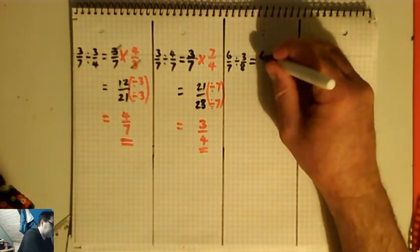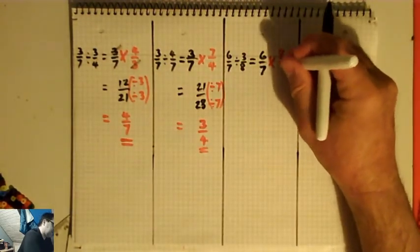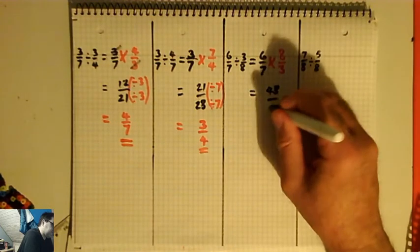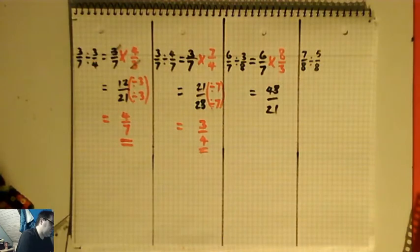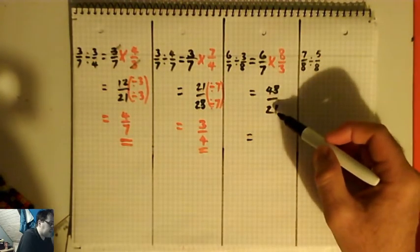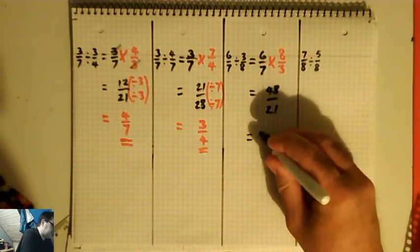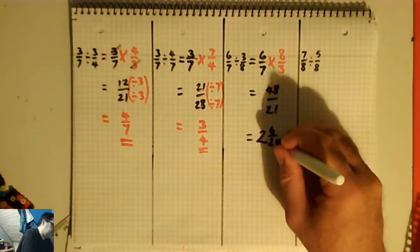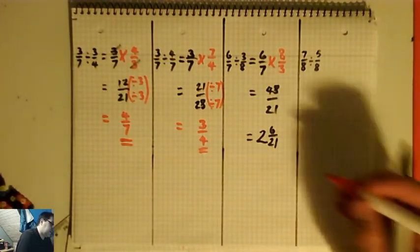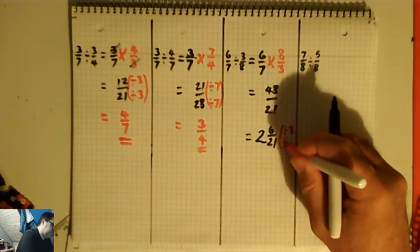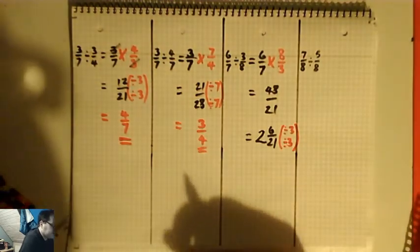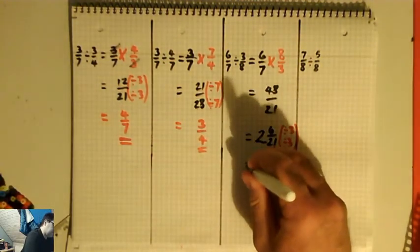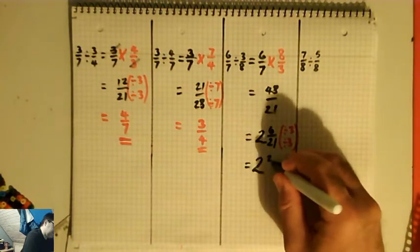Six-sevenths divided by three-eighths is the same as six-sevenths times eight over three. Six times eight on the top is forty-eight, seven times three on the bottom is twenty-one — so it's forty-eight over twenty-one. How many twenty-ones can I get out of forty-eight? Two twenty-ones give me forty-two, but with forty-eight there I've got six left over, so it's two and six over twenty-one. The numerator and denominator both have a common factor of three, so I divide top and bottom by three — dividing by three over three, which is like dividing by one — to reduce that to two and two-sevenths.